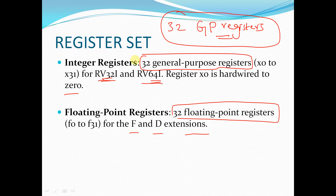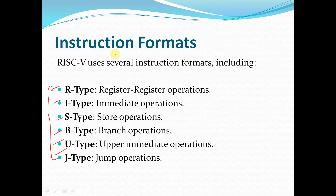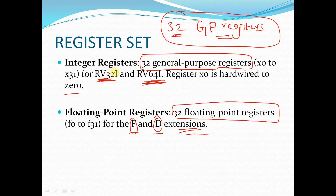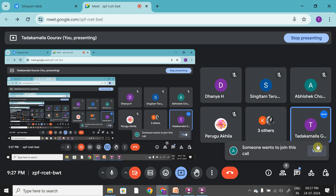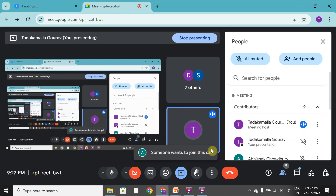Resuming: we have register sets — general-purpose registers. Whether using RV32I, RV64I, RV16I, or RV128I, the total number of general-purpose registers is 32. We also have 32 floating-point registers if we add the F and D extensions.